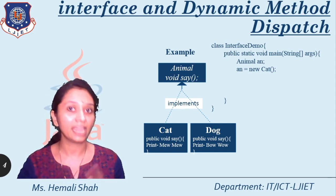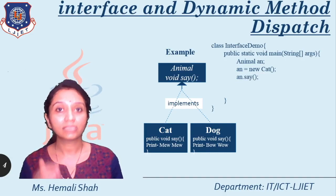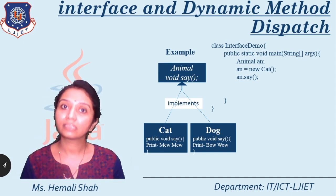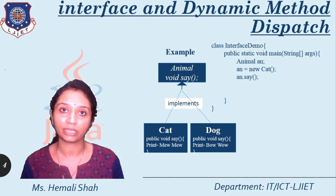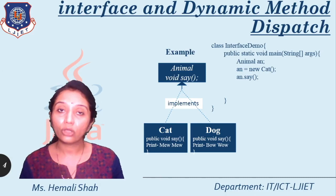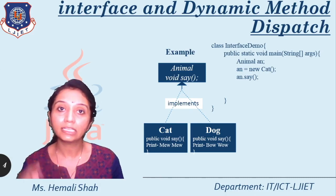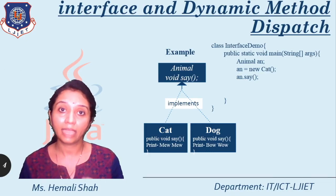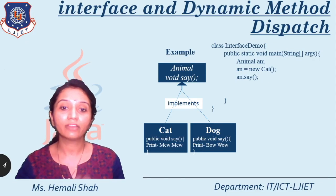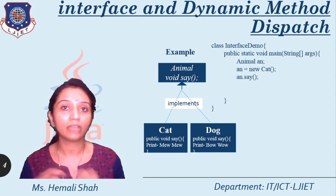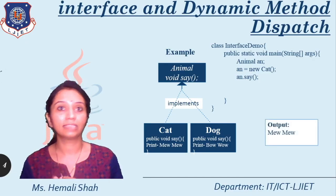Now try to call the function an.say. Whenever you call the an.say function, at runtime the JVM first finds where 'an' refers. Currently 'an' refers to the cat object, so whenever you make the function call on an.say, it always refers to the current class instance. That's why it calls the cat class say function, not the dog class say function. So here you will get the output of the say function of cat — the cat class has say function implementation printing 'meow meow', and you will get the output meow meow.